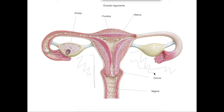It goes all the way down into the pelvis, covering the uterus and the ovaries from the front side, all the way around over the top and around to the back — so both anteriorly and posteriorly. It covers the fallopian tubes and the uterus.